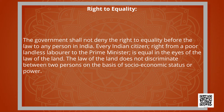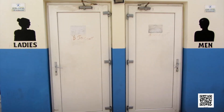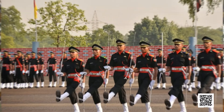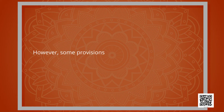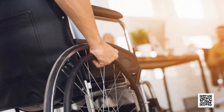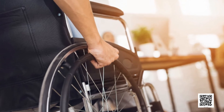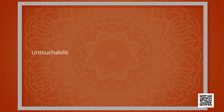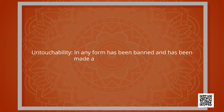Every citizen has equal access to public places and facilities like temples, bathing ghats, roads, public toilets, and community wells. Every person gets equal opportunity to compete for public jobs like civil services and defense services. However, special provisions have been made to give preference to people from SCs, STs, women, and OBCs. Similarly, the physically disabled are also given reservation in government jobs, to uplift these social groups. Untouchability in any form has been banned and made a punishable offense in India.